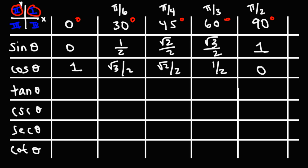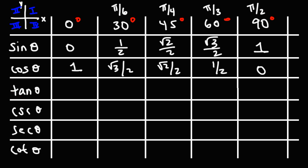Sine is negative in quadrants 3 and 4. Cosine is positive on the right side in quadrants 1 and 4, and it's negative in quadrants 2 and 3. Tangent is positive whenever sine and cosine have the same sign, so tangent is positive in quadrants 1 and 3. Cosecant is the reciprocal of sine, so whenever sine is positive, cosecant will be positive. Secant is the reciprocal of cosine, so whenever cosine is positive, secant is positive. And the same relationship exists between tangent and cotangent.